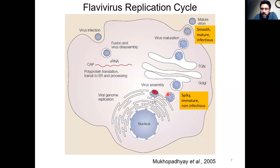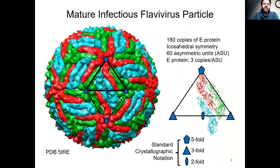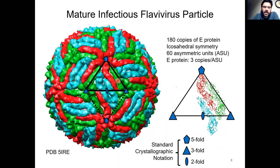These fully assembled but non-infectious particles are then transported into the Golgi, wherein they undergo maturation into smooth mature infectious particles. These infectious particles are then released outside the cell for the next round of infection. Shown here is a typical structure of a mature infectious flavivirus particle. The surface of these particles contains exactly 180 copies of the E-protein, colored in red, blue, and green. These particles have what is called icosahedral symmetry.